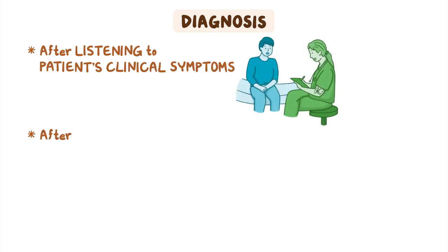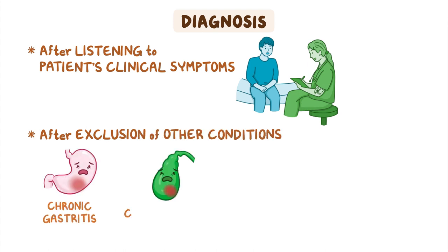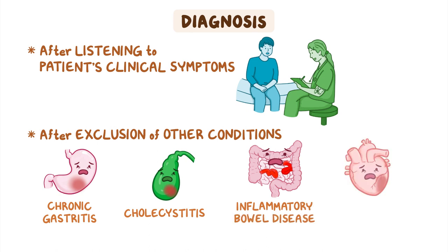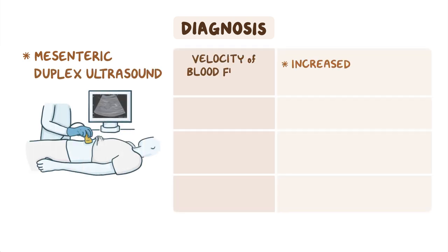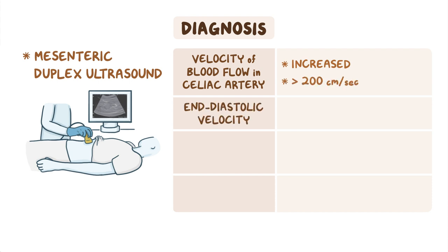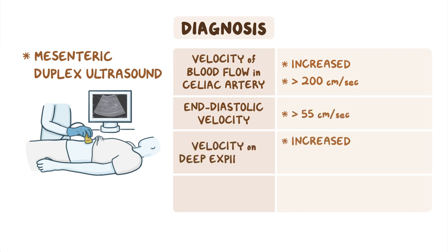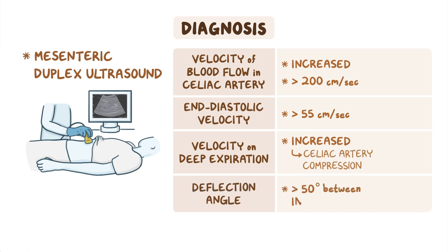A diagnosis of MALS is made after listening to the patient's clinical symptoms as well as the exclusion of other conditions like chronic gastritis, cholecystitis, inflammatory bowel disease, and cardiac disease. A mesenteric duplex ultrasound of the abdomen will show increased velocity of blood flow in the celiac artery, typically more than 200 cm per second, an end diastolic velocity of more than 55 cm per second, and an increase in velocity on deep expiration indicates celiac artery compression. A deflection angle greater than 50 degrees between inspiration and expiration is also indicative of MALS.